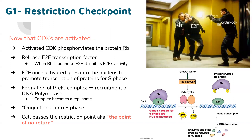Going off of that, if RB loses its function, it can't bind to E2F anymore. That would be an over-proliferative phenotype because if E2F isn't being inhibited, then it can initiate S phase.